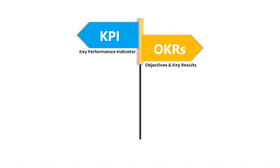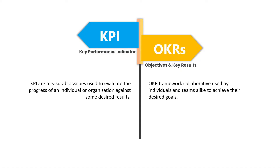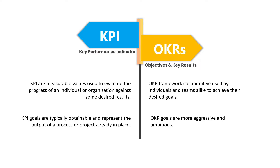Let's quickly compare KPIs and OKRs. KPIs are measurable values used to evaluate the progress of an individual or organization against some desired results. OKR is a collaborative framework used by both individuals and teams to achieve their desired results. KPI goals are typically obtainable and represent the output of a process or project already in place, while OKR goals are more aggressive and ambitious.